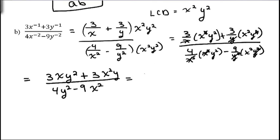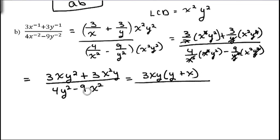So now on the top we can factor out a 3xy, and when we do that we'll be left with y plus x. And on the bottom, this is the difference of two perfect squares, so it's going to factor as 2y plus 3 times 2y minus 3. This did not help us cancel anything new, but you should always factor everything just to double check.